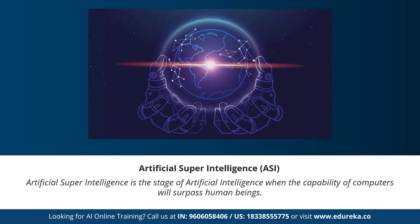Moving on to the last stage: artificial super intelligence. This is the stage of AI when the capability of computers will surpass human beings. Artificial super intelligence is currently seen as a hypothetical situation, as depicted in movies and science fiction books. We don't currently have any machine capable of thinking or reasoning better than a human being. Artificial super intelligence refers basically to any system that is much smarter than humans.